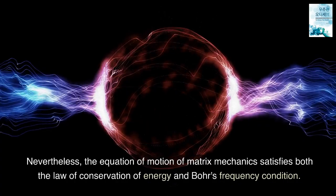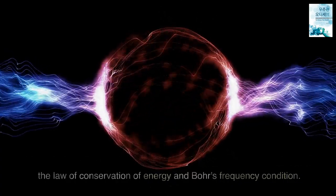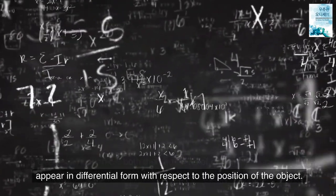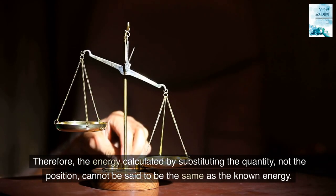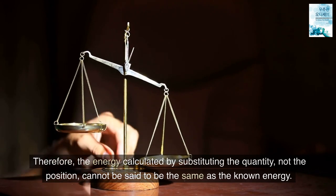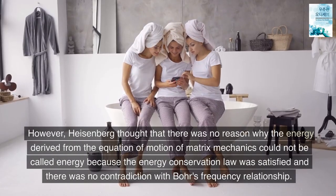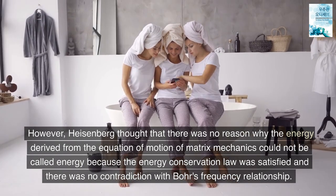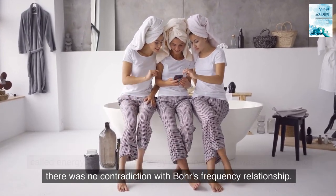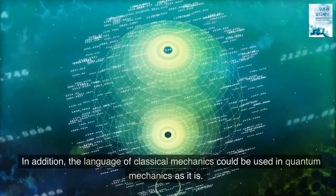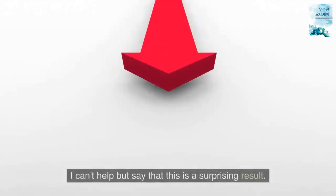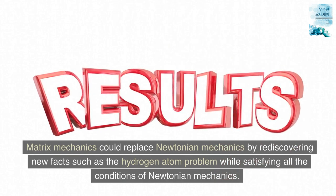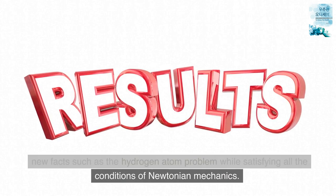Nevertheless, the equation of motion of matrix mechanics satisfies both the law of conservation of energy and Bohr's frequency condition. In classical mechanics, both the equations of motion and kinetic energy appear in differential form with respect to the position of the object. Therefore, the energy calculated by substituting the quantity, not the position, cannot be said to be the same as the known energy. However, Heisenberg thought that there was no reason why the energy derived from the equation of motion of matrix mechanics could not be called energy because the energy conservation law was satisfied and there was no contradiction with Bohr's frequency relationship. In addition, the language of classical mechanics could be used in quantum mechanics as it is. I can't help but say that this is a surprising result. Matrix mechanics could replace Newtonian mechanics by rediscovering new facts such as the hydrogen atom problem while satisfying all the conditions of Newtonian mechanics.